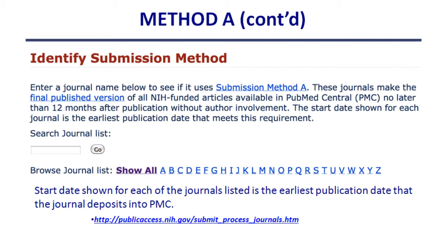When you look at this list, for example, Blood is one of the journals that deposits. You need to look at the date that they started depositing. If the date was after April 7, 2008, you're fine. If not — like if they only started depositing this year — the author or PI needs to comply. Those dates are very important; you can't make the assumption. Also, when you go into the NIMS system and start depositing something, the system will say you do not need to — the journal does it. So you can stop right there; the system will let you know that you're off the hook.